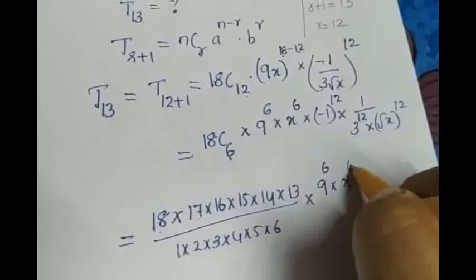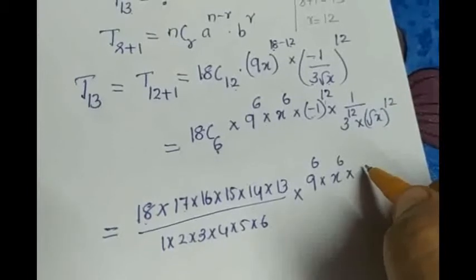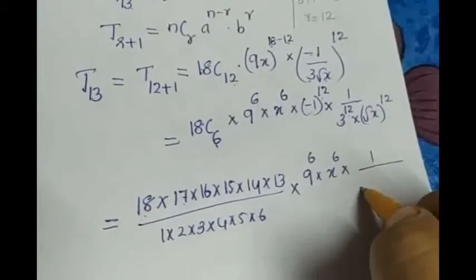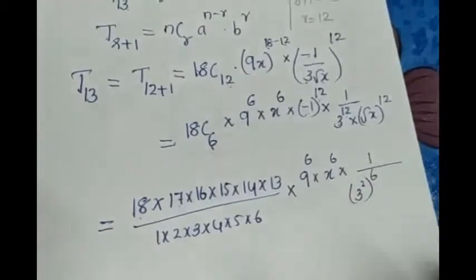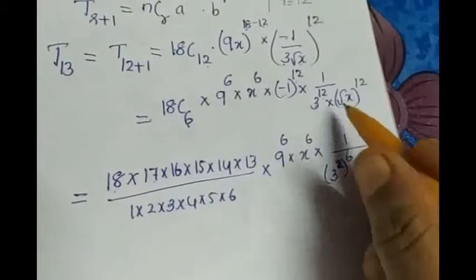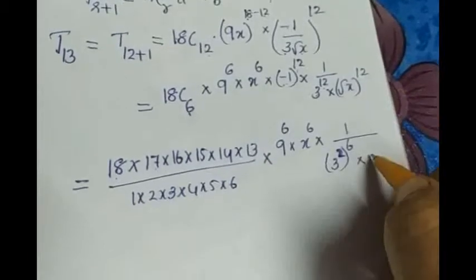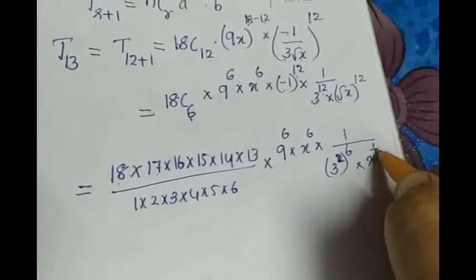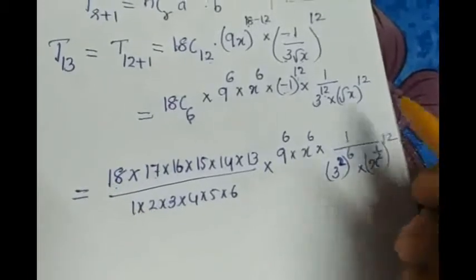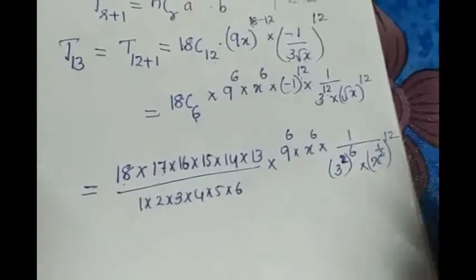x^6 into (-1)^12 is a positive one. So I am avoiding that 1 by instead of 3^12, can I write (3^2)^6? Because in the previous question, when 2 powers came, we multiply, doesn't it? So instead of 12, I am writing (3^2)^6 into here √x, it is actually x^(1/2). The whole raised to 12.